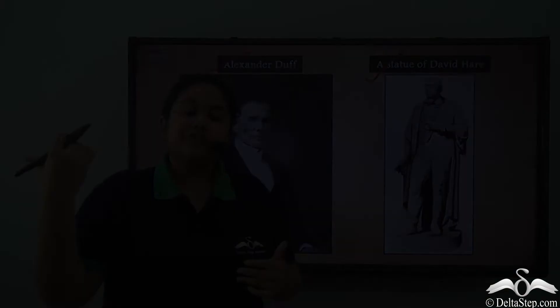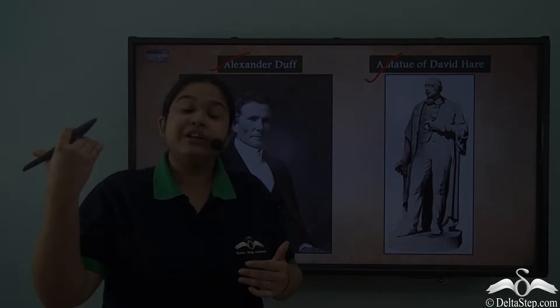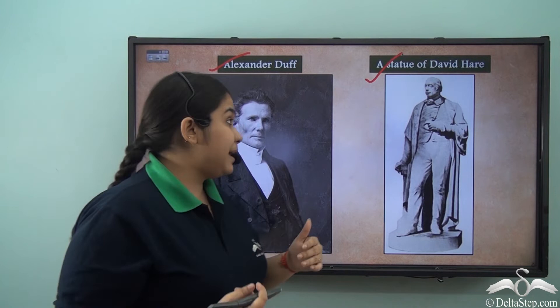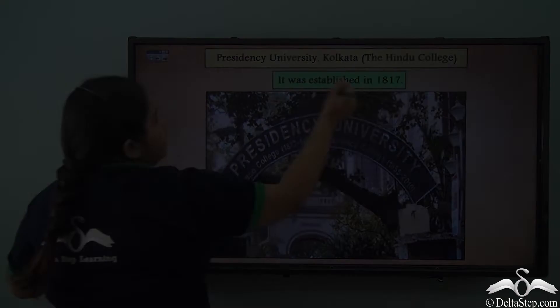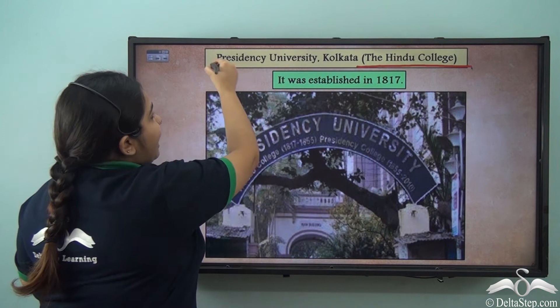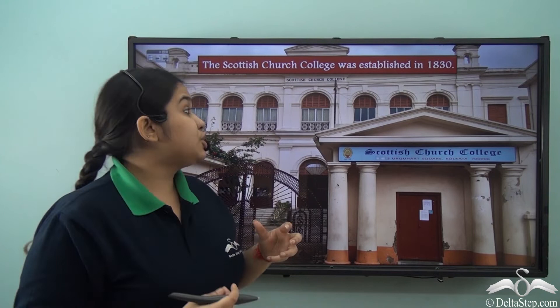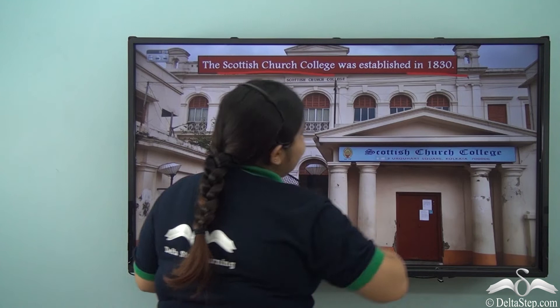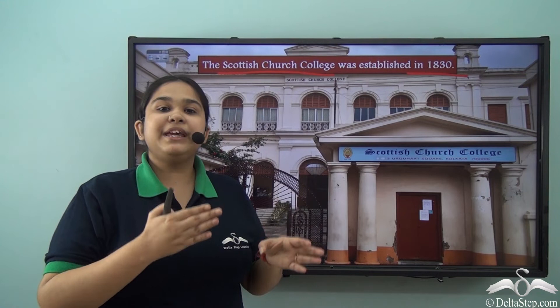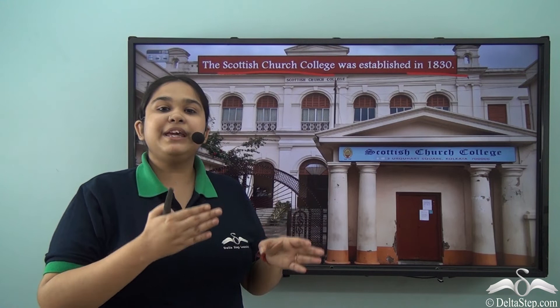Changes were happening not only in religious terms but also in societal terms. Raja Ram Mohan Roy, along with Alexander Duff and David Hare, established the Hindu College — now known as Presidency University — in 1817. He also established the Scottish Church College in 1830, which focused on co-educational studies. This became the first institution to promote co-ed studies and brought the education system out of traditional orthodox methodologies.